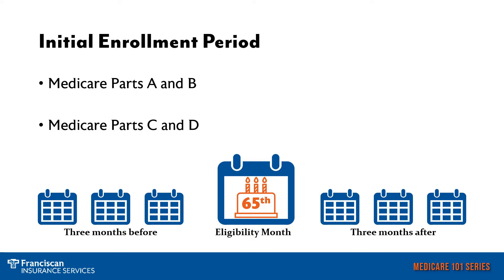Let's start with the initial enrollment period. This is when you can enroll in your Medicare Part A and Medicare Part B, which is your original Medicare. You can also enroll in Medicare Part C Advantage plans and your Medicare Part D prescription drug plans. The initial enrollment period starts three months before you turn 65, then the month you first become eligible when you turn 65, and then three months after you turn 65. During this time, you can enroll at any point for Medicare Parts A, B, C, and D.